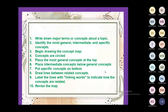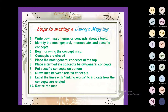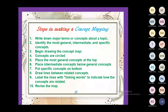Fourth, draw lines between related concepts and label the lines with linking words to indicate how the concepts are related. Fifth and last, revise the map. These are the steps related to concept mapping — how to make a concept map.